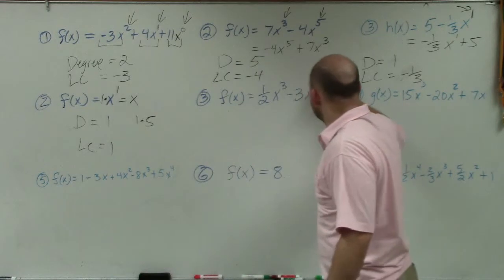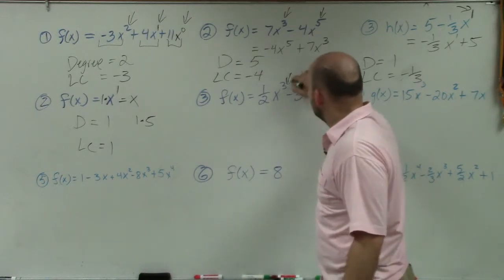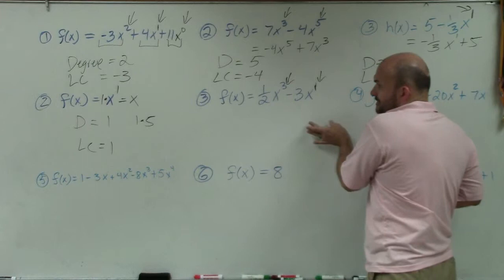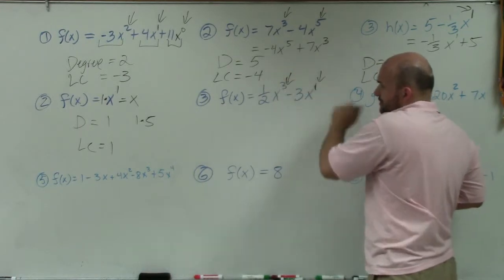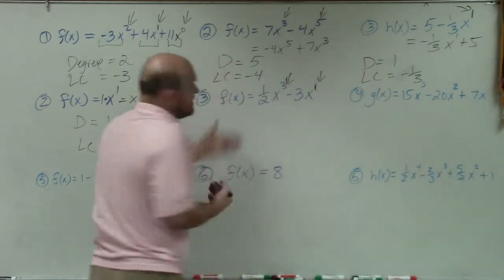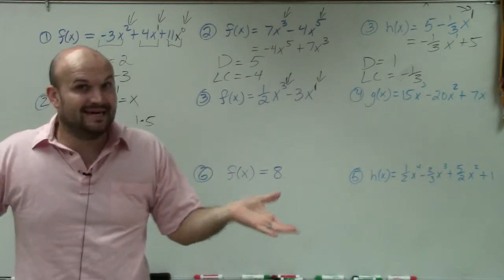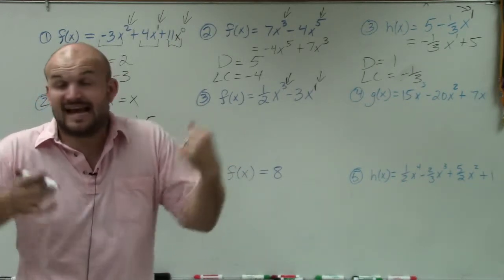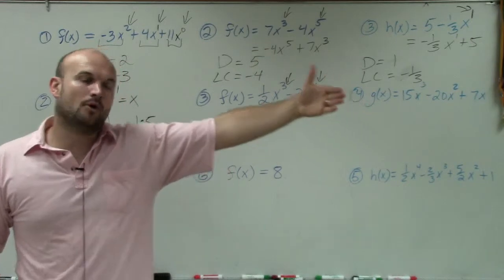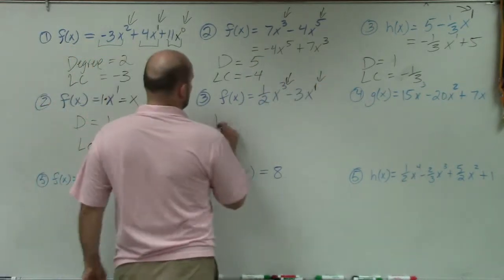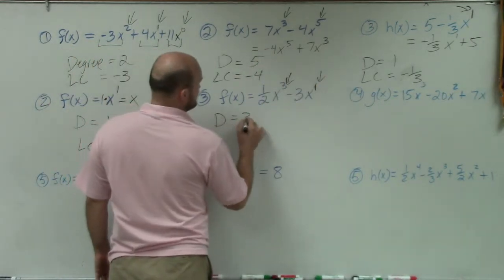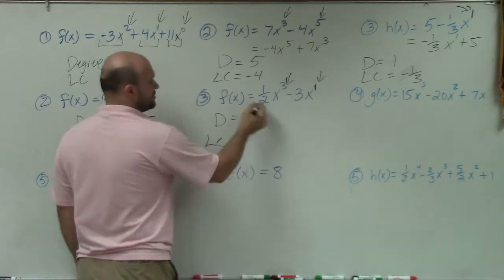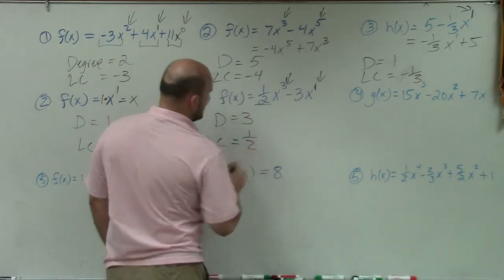In this example, you can see the powers are 3 and 1. This is already in descending order — the largest power is first and then the smallest power. There is a fraction coefficient, but that's OK. The leading coefficient does not affect our descending order at all. So our degree is going to be the largest power, which in this example is 3, and our leading coefficient is 1/2.